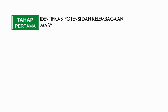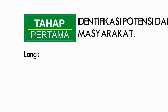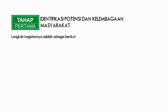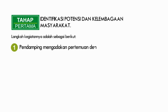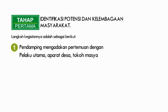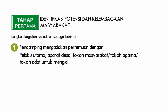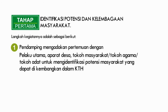Tahap pertama adalah identifikasi potensi dan kelembagaan masyarakat. Langkah kegiatannya adalah sebagai berikut. 1. Pendamping mengadakan pertemuan dengan pelaku utama, aparat desa, tokoh masyarakat, atau tokoh agama, atau tokoh adat untuk mengidentifikasi potensi masyarakat yang dapat dikembangkan dalam KTH.